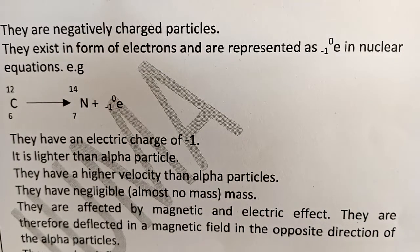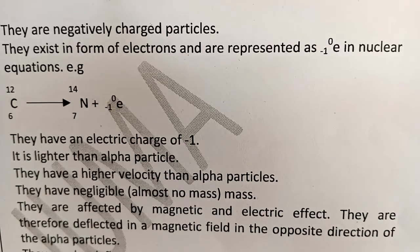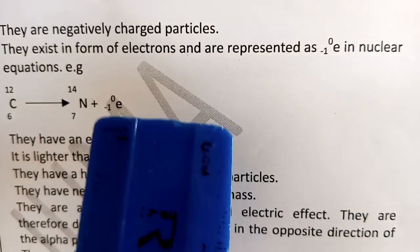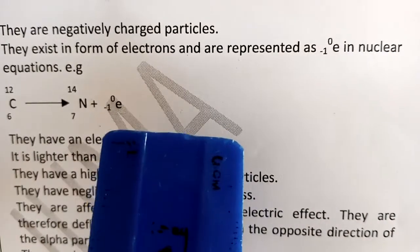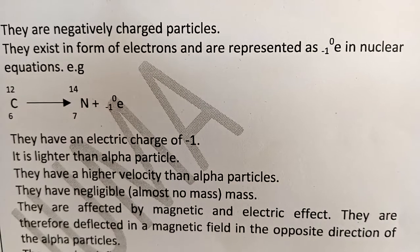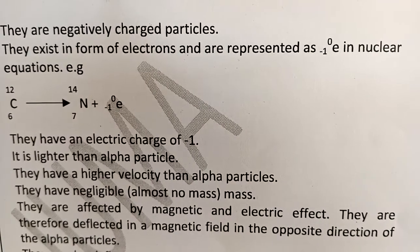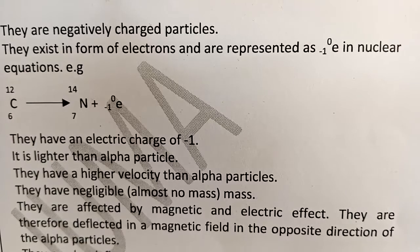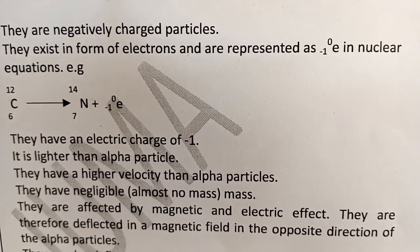Beta particles have an electric charge of negative one. The number shown on the electron symbol is not the mass — electrons have negligible mass. That sign is just to indicate the charge of the beta particle, which is minus one.